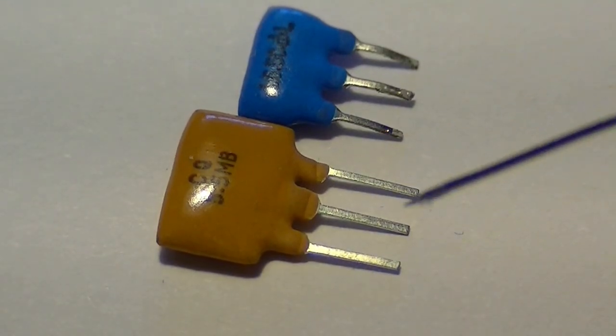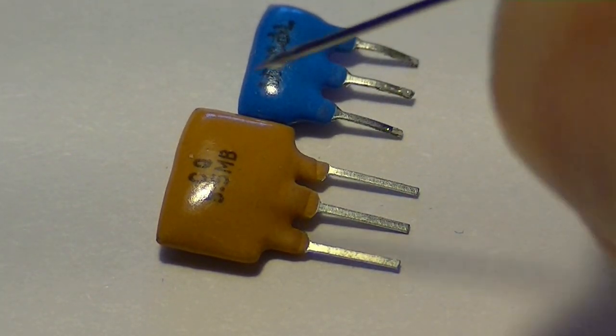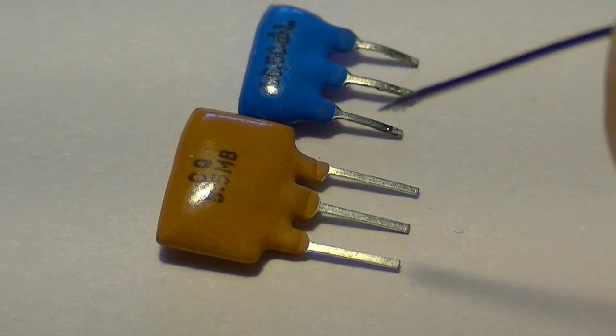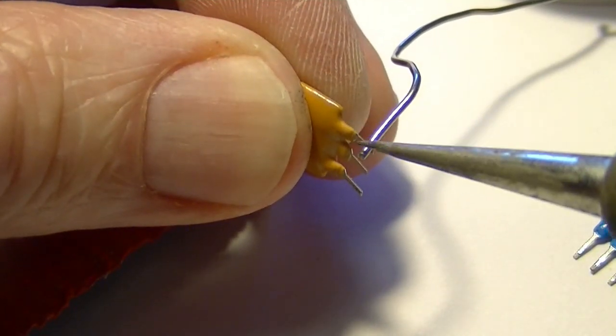Next I'm going to trim the leads of the replacement trap filter to match the same length as the original and make sure the spacing is the same between the pins. Next I'm going to go ahead and tin all of the leads ahead of time.